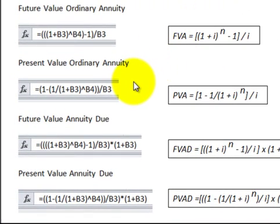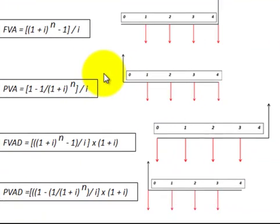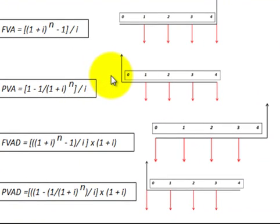Here's the present value of an ordinary annuity. Here's the formula for it, and here's the thumbnail sketch of cash flows.